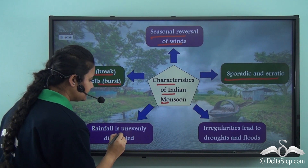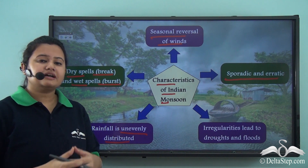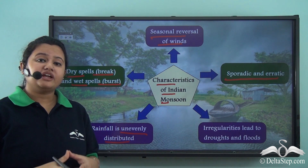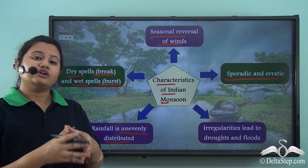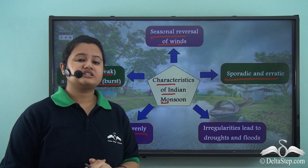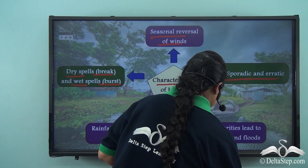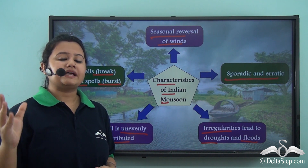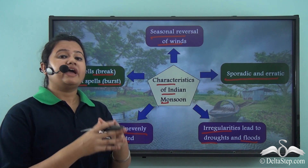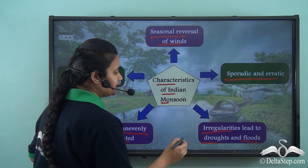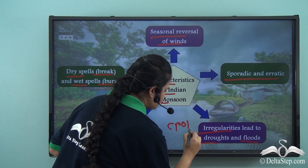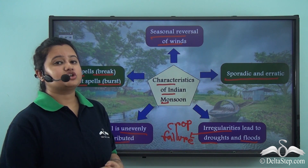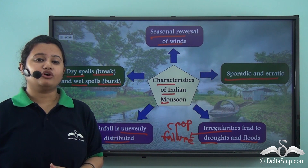Rainfall in India is unevenly distributed — some places receive heavy rainfall of above 200 cm, whereas some other places receive scanty rainfall of less than 60 cm. The last characteristic of Indian monsoon is that it is irregular in nature, leading to droughts and floods. Drought occurs due to delayed monsoon and scanty rainfall, whereas flood occurs due to heavy and torrential rainfall. This drought and flood situation leads to crop failure, which has a negative impact on Indian economy.